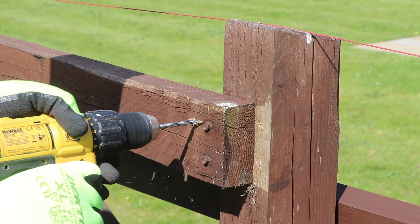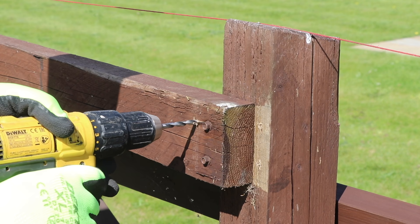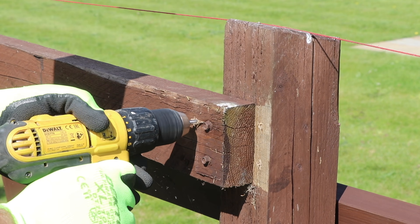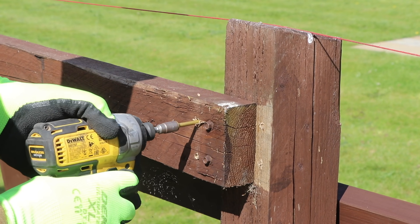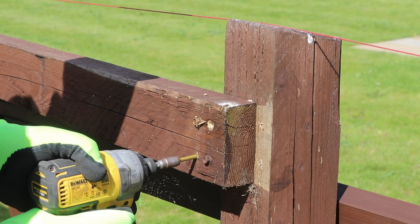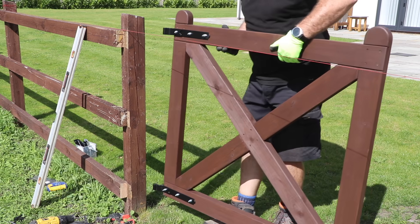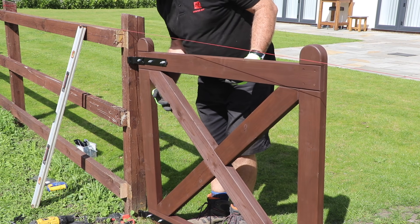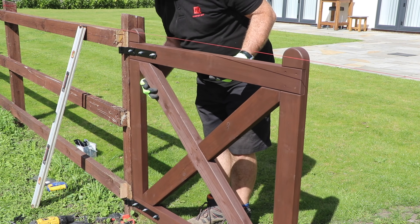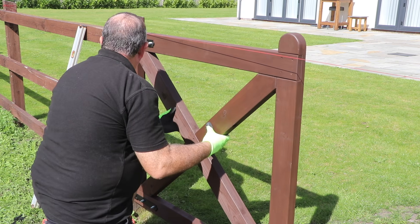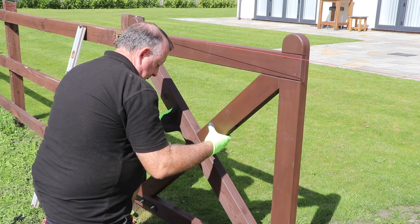Before I can install the gates, I need to trim the existing rails back a touch to allow room for the hinges. I've designed these gates with just a 10mm gap between the gates and the existing posts and between each other, so I don't have much room to play with here.